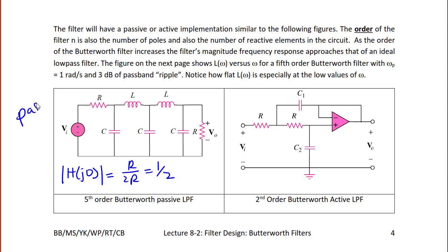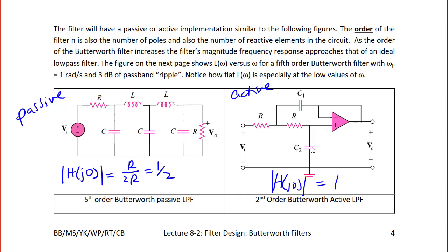An active Butterworth filter uses an op-amp and is second order because it has two capacitors. At low frequencies, both capacitors behave like open circuits, giving H(j0) = 1. At high frequencies, the capacitors look like short circuits: the positive terminal gets shorted to ground, the negative terminal gets shorted to ground, and the output goes to zero. Similarly, the other capacitor shorts out the resistor at high frequencies, so the gain also goes to zero.